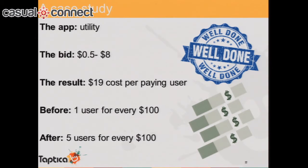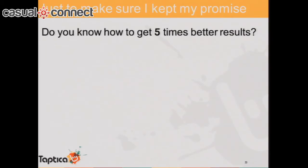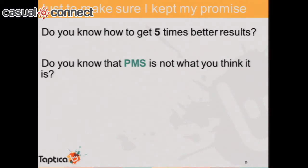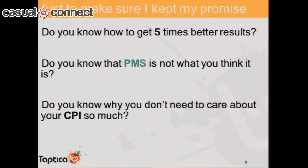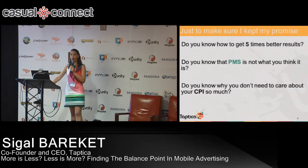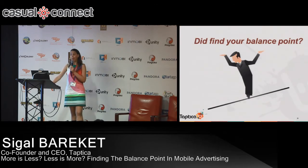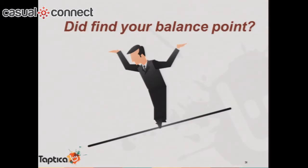That's pretty much what I wanted to say about PMS and how to get better results. Let's verify I kept my promises. Hopefully you now know how to get five times better results on your mobile campaign. You know that PMS is actually a good thing in mobile advertising. You know that CPI doesn't really matter because you can have different CPIs per media source — what matters is how many engaged users you're getting and what the user is actually doing in your app. And hopefully you've found your balance point.